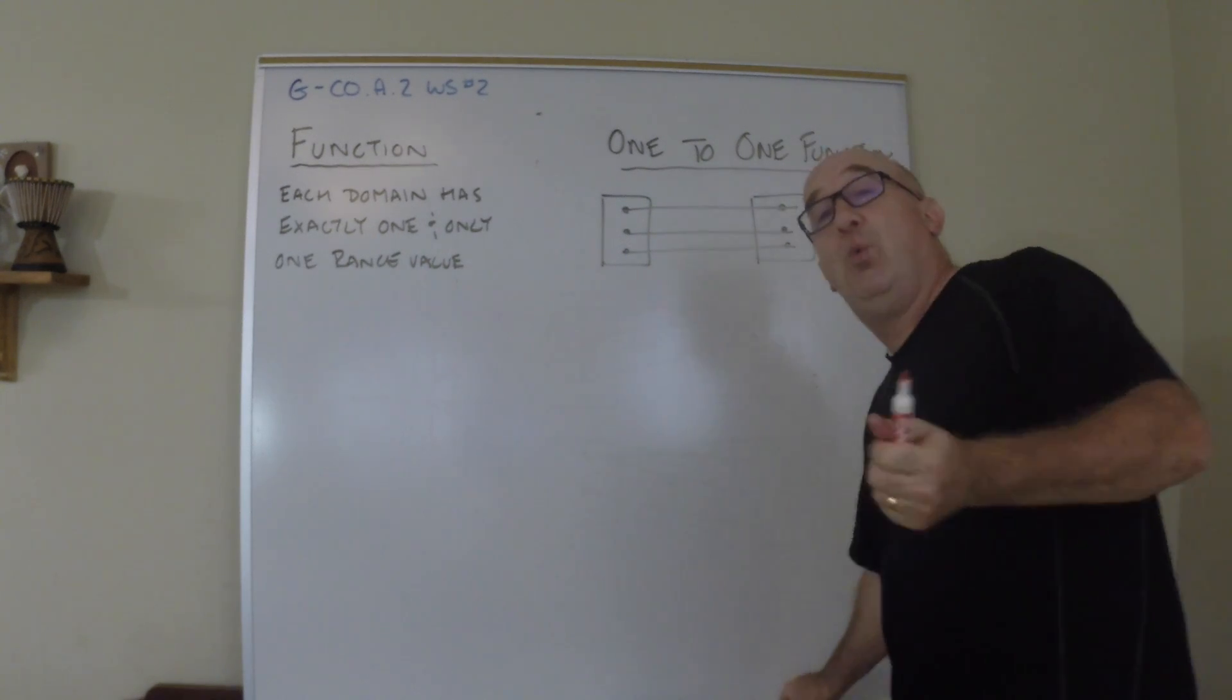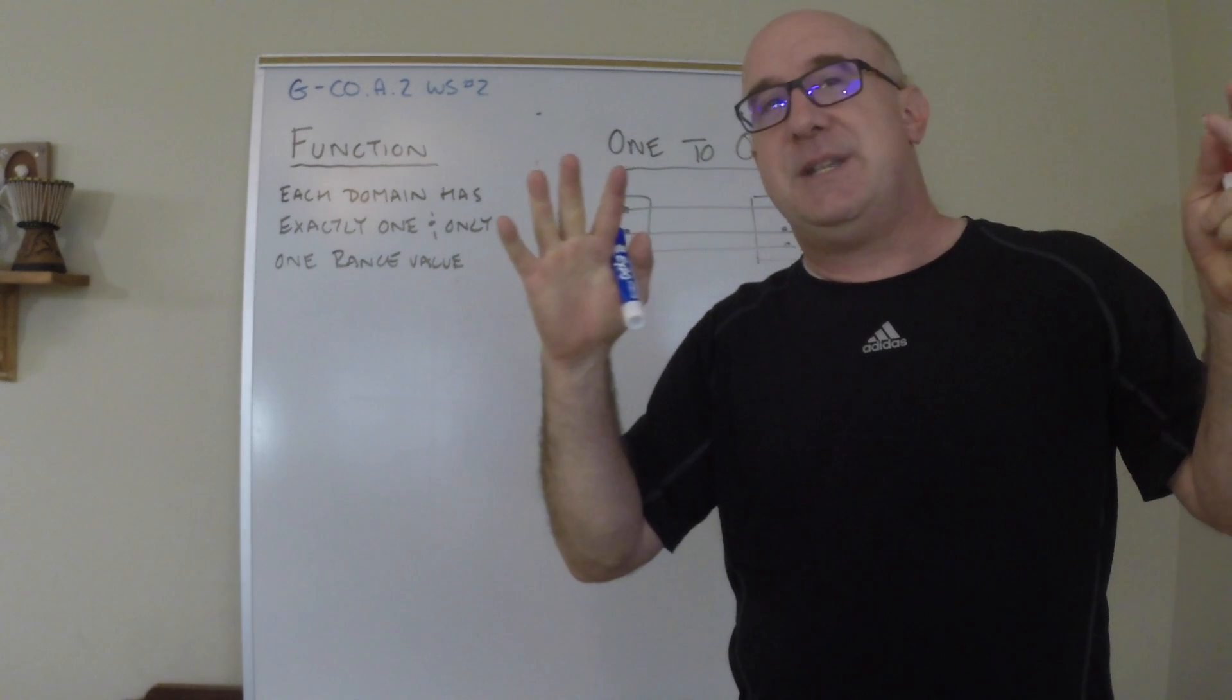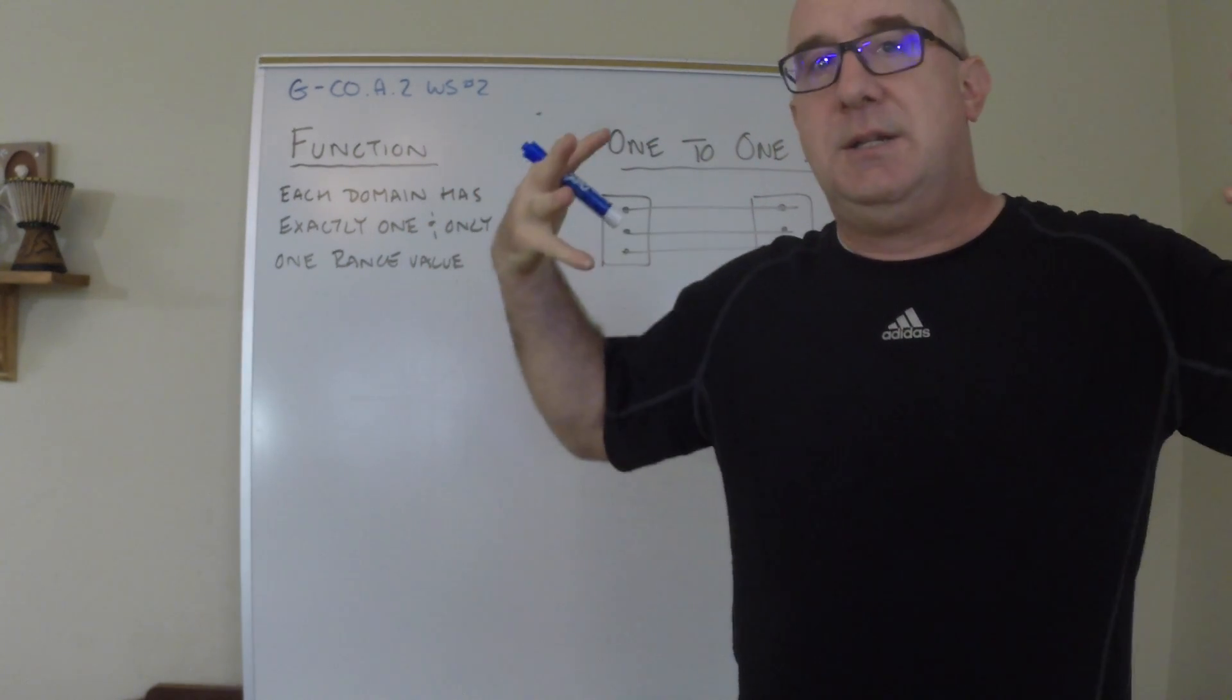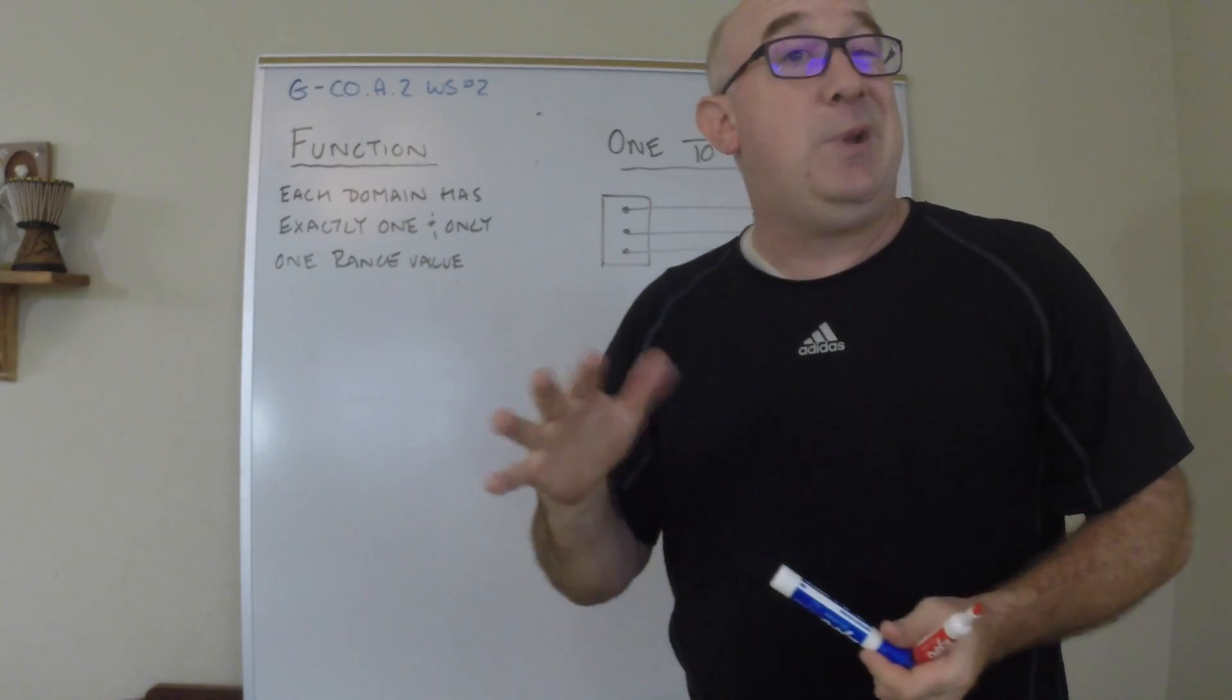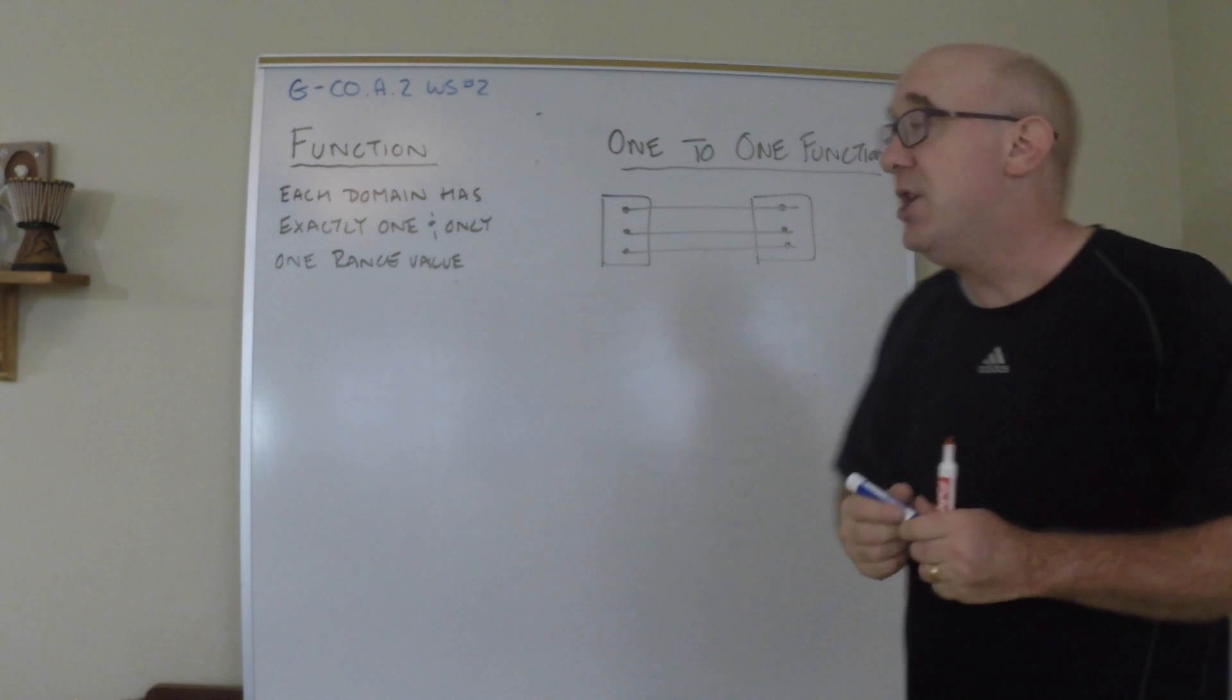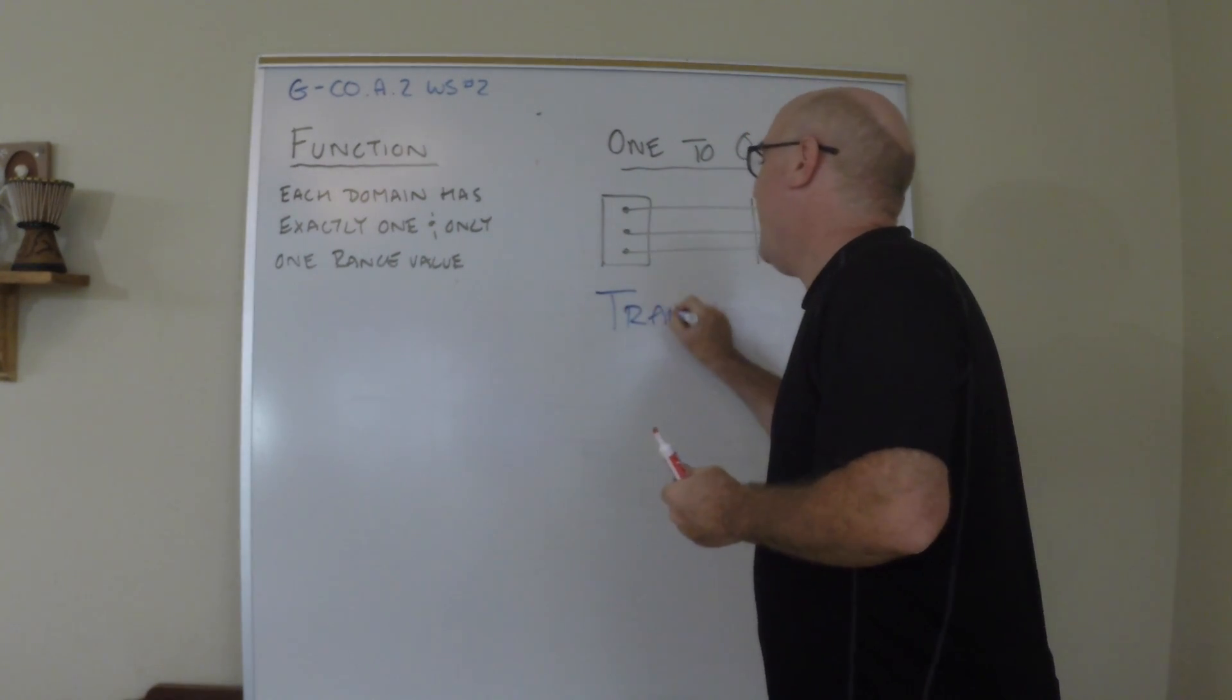And so in our world, in the geometry world, we upgrade this from this business of a mapping, which is just generally meaning to take points and to move them to a new location. But we could have a weird situation where we may lose a point or two in a mapping. So we want to upgrade to something called a transformation.